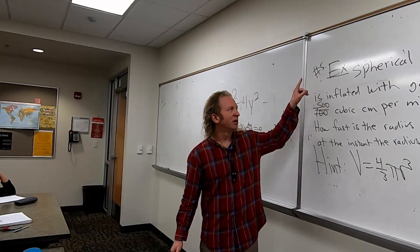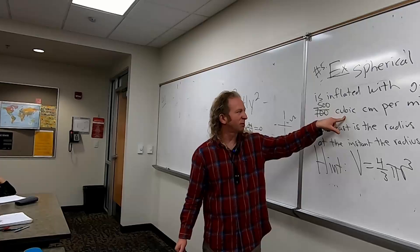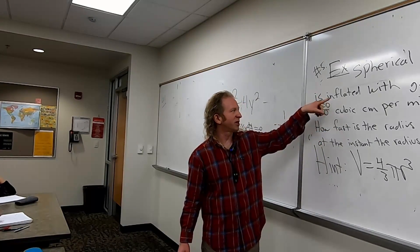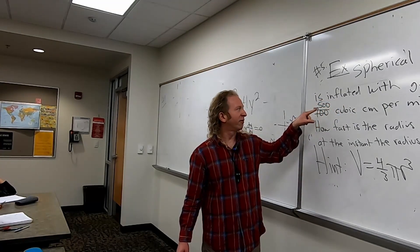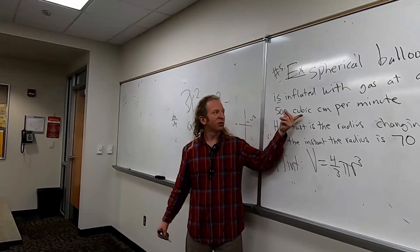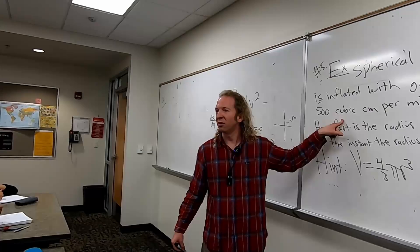So let's read it again. A spherical balloon is inflated with gas at a rate of 500 cubic centimeters per minute. How fast is the radius changing at the instant the radius is 70? So we're given the first sentence. So it's inflated with gas at a rate of 500 cubic centimeters per minute. So that's a rate of change. That's a derivative. But what is that the rate of change of?